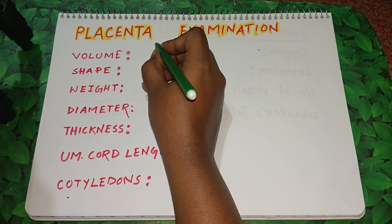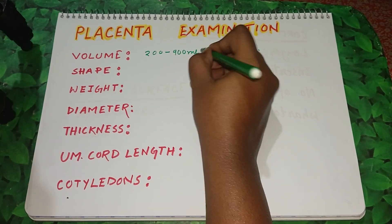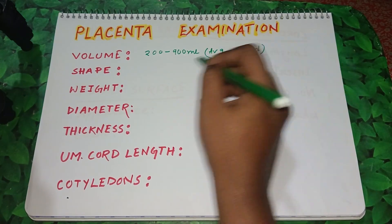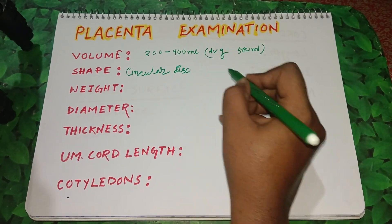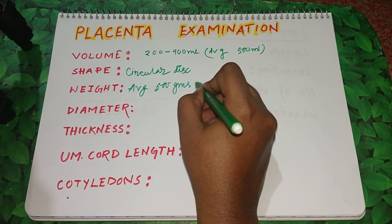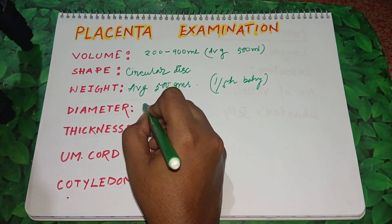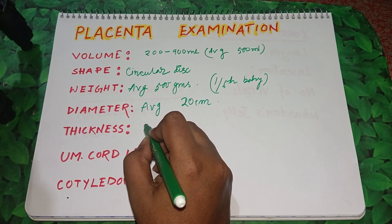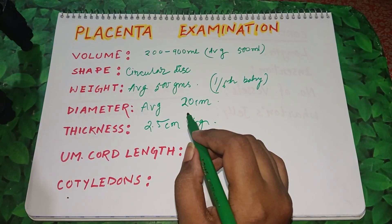The volume of the placenta is 200 to 900 ml, average is 500 ml. The shape is a circular disk. The weight of the placenta is average 500 grams, which is one sixth of the baby's weight. The average diameter is 20 centimeters and the thickness is 2.5 centimeters.